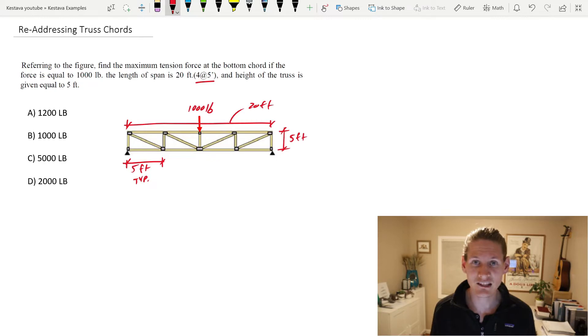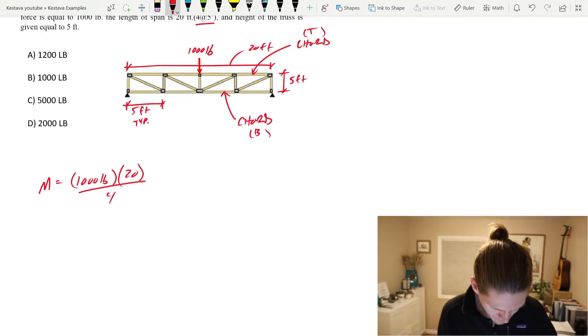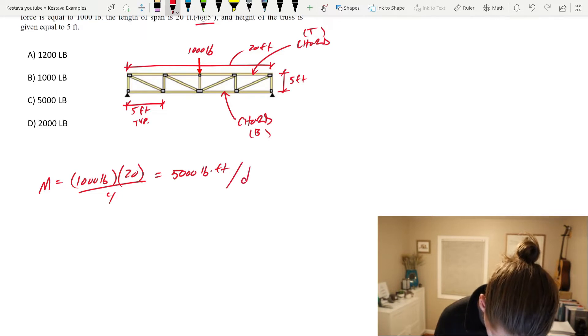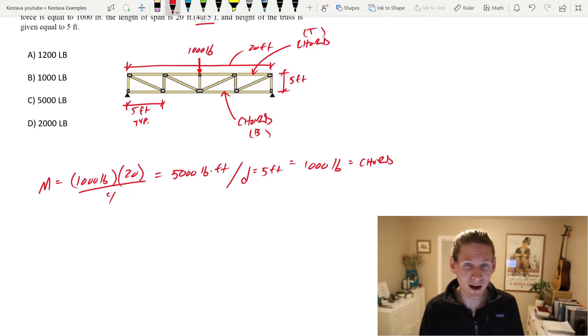The unknown being what is the maximum tensile force in the bottom chord of our truss. And before, all I did was find the moment M, which just equaled 1,000 pounds times 20 feet over four, which equaled 5,000 pound-feet. And then divided that by D, the depth, which equaled five feet to get us 1,000 pounds in our chord, both top and bottom. So in compression and tension. And that was our final answer.